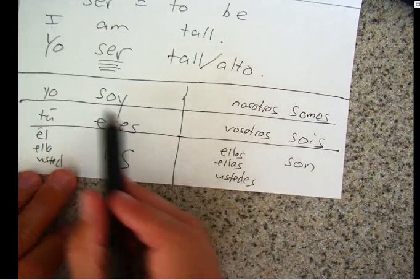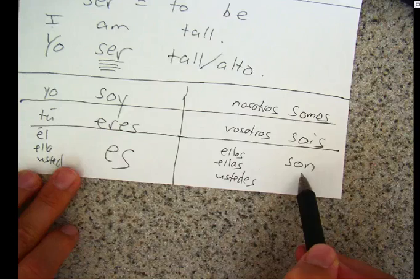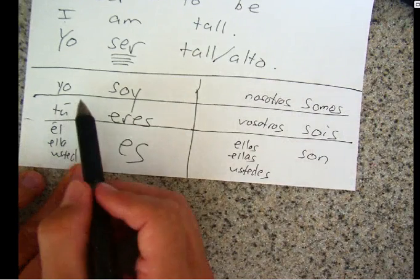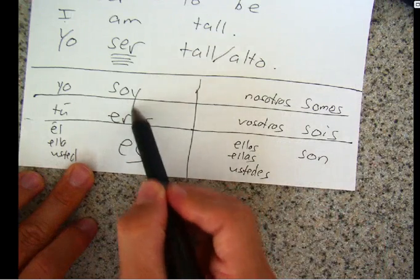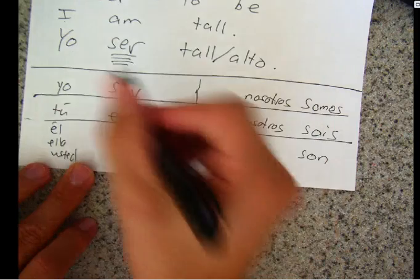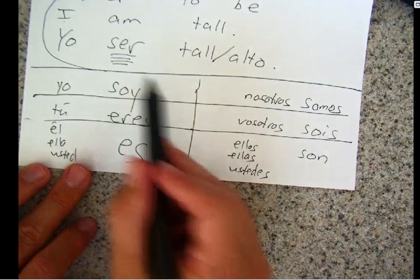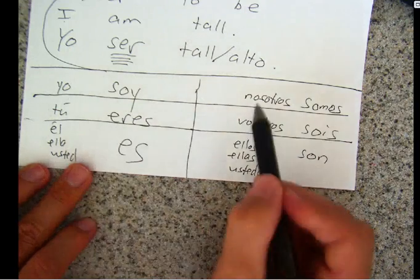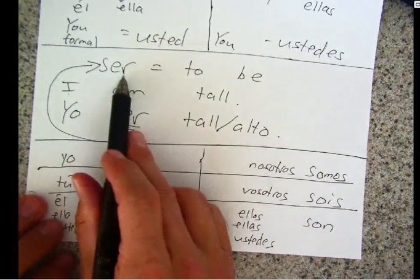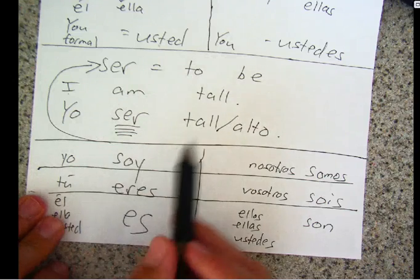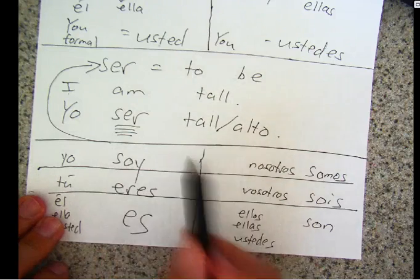Please memorize these: yo soy, tú eres, él es, nosotros somos, vosotros sois, ellos/ellas/ustedes son. There are two pieces of knowledge here: the subject pronoun and the conjugated form of the verb ser. You have to memorize the subject pronouns and also the conjugated forms of ser, because you don't just say yo ser alto — you've got to say yo soy alto. Alto means tall. Gracias.